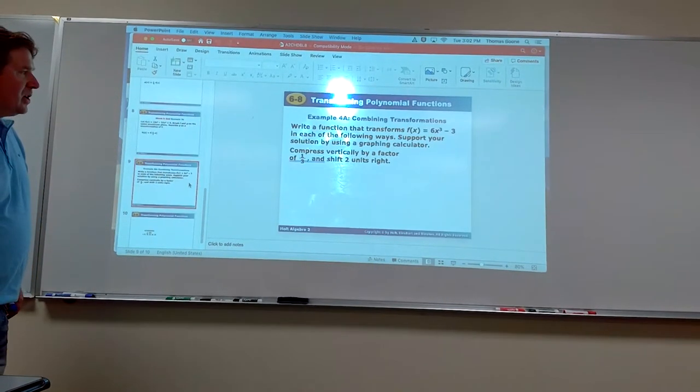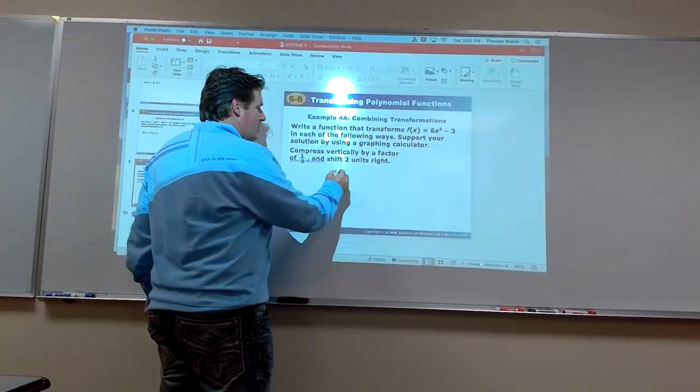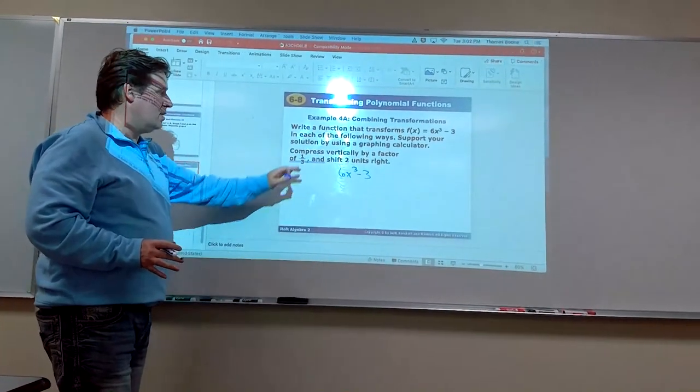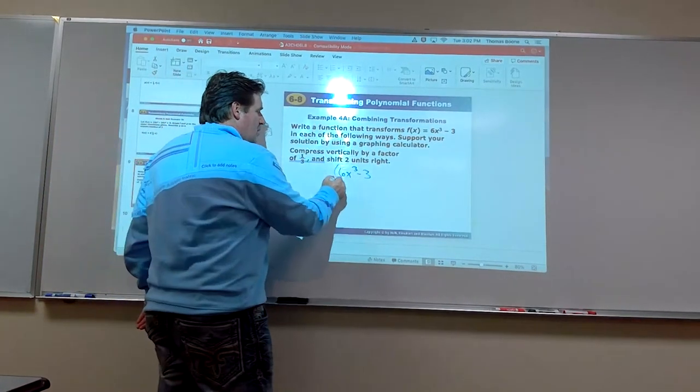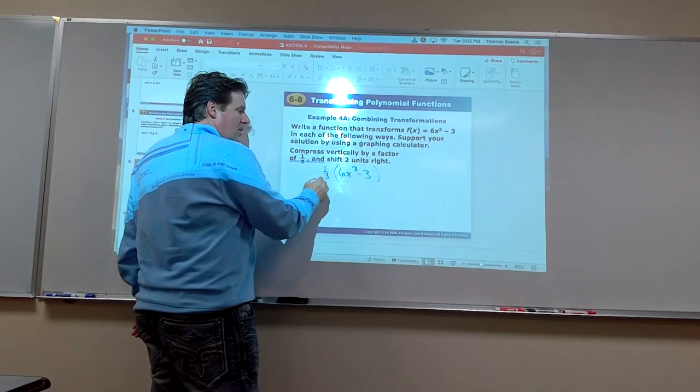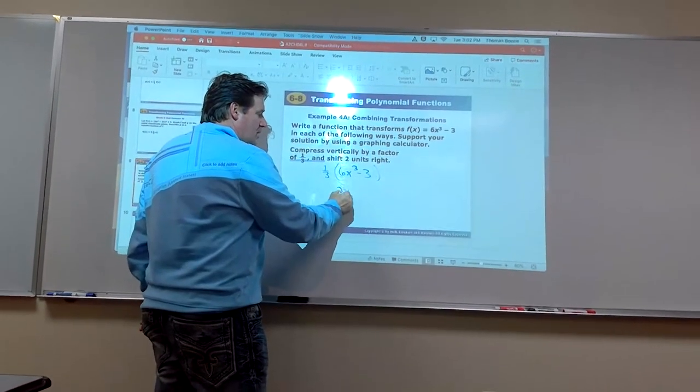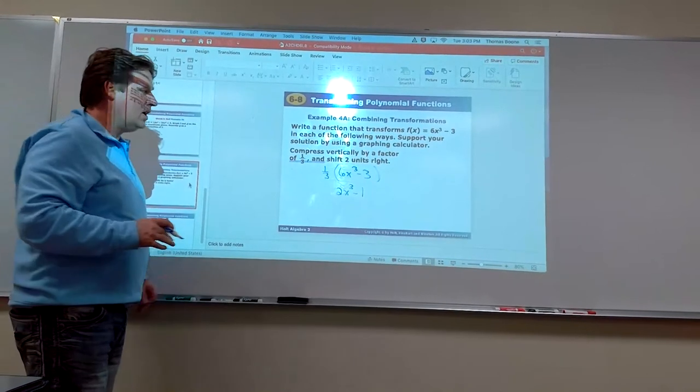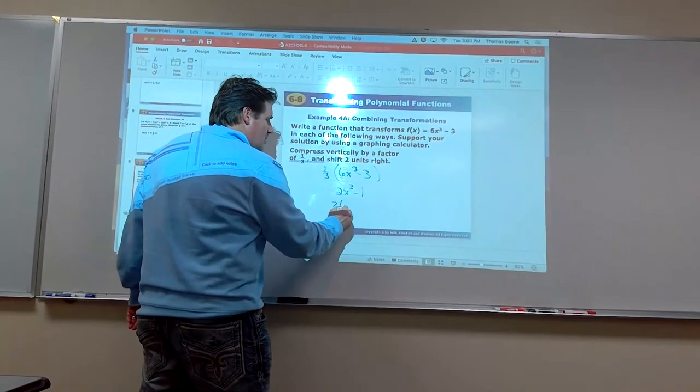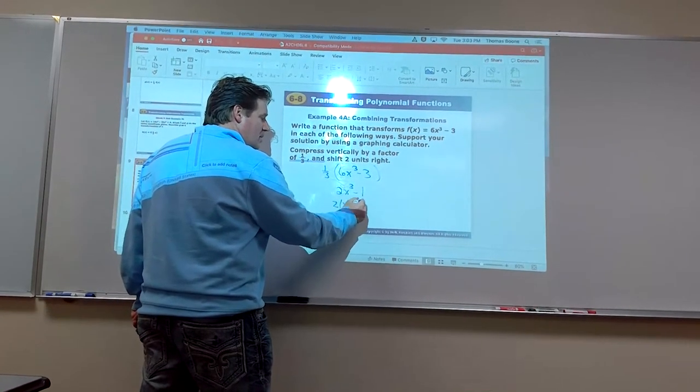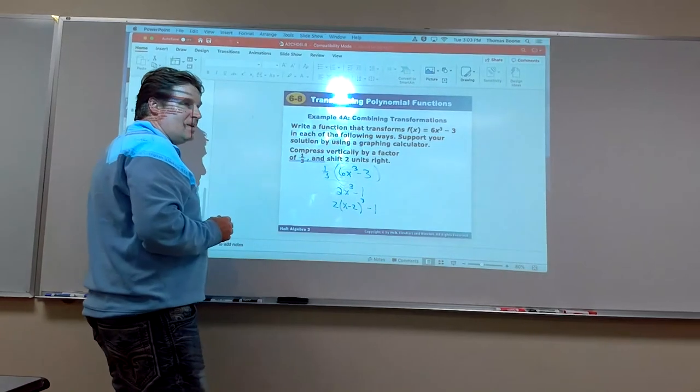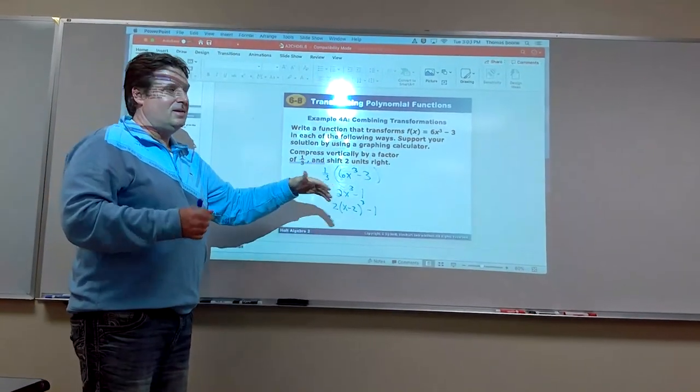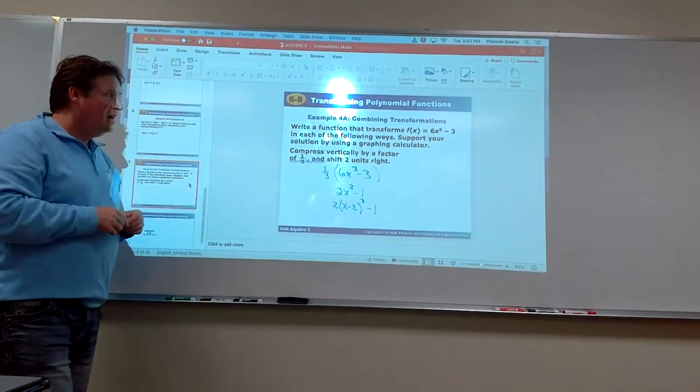There's always cases where we start with a particular function. Let's start with 6x³ - 3 and do a couple of transformations. We'll compress it vertically by a factor of 1/3. That means we multiply by 1/3, which simplifies to 2x³ - 1. Next, we'll shift it two units to the right. To go right, we replace x with (x - 2). You don't need to simplify - you can leave it like that. When doing multiple transformations, always do one, simplify it, then apply the next.